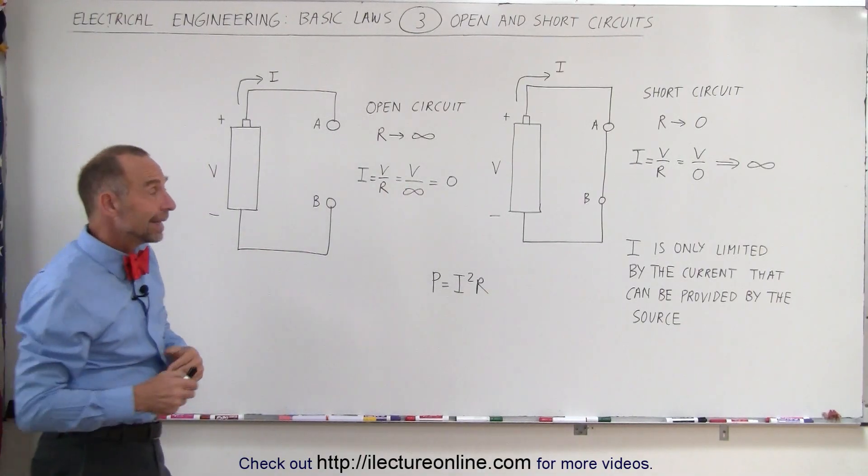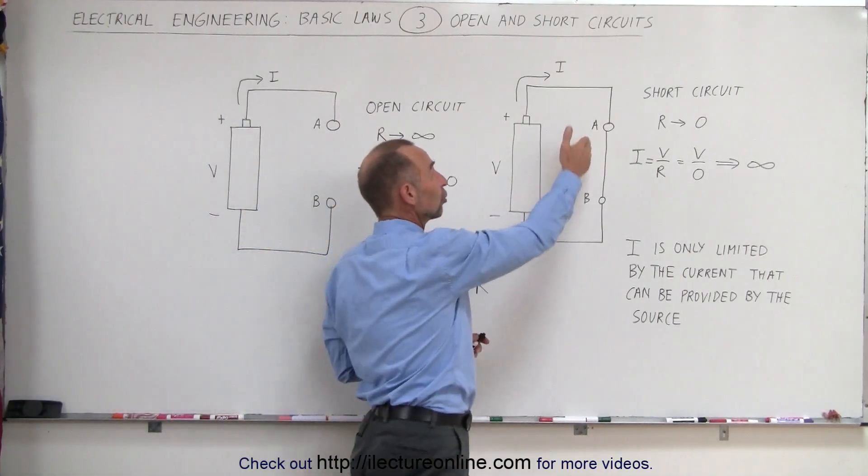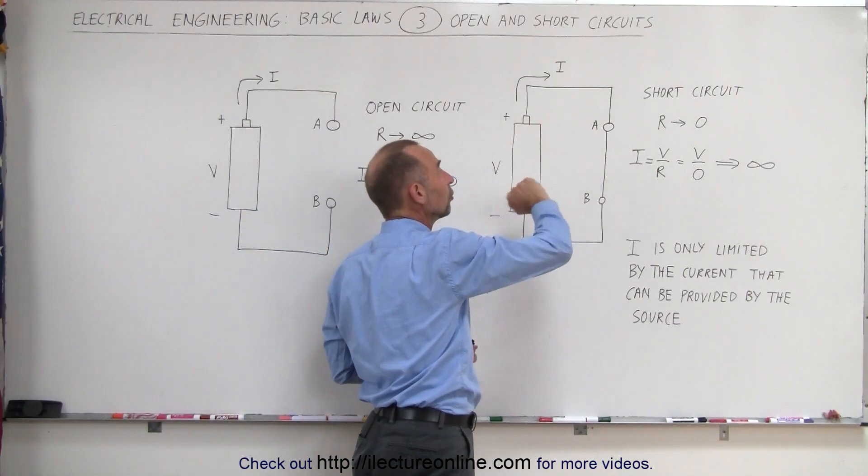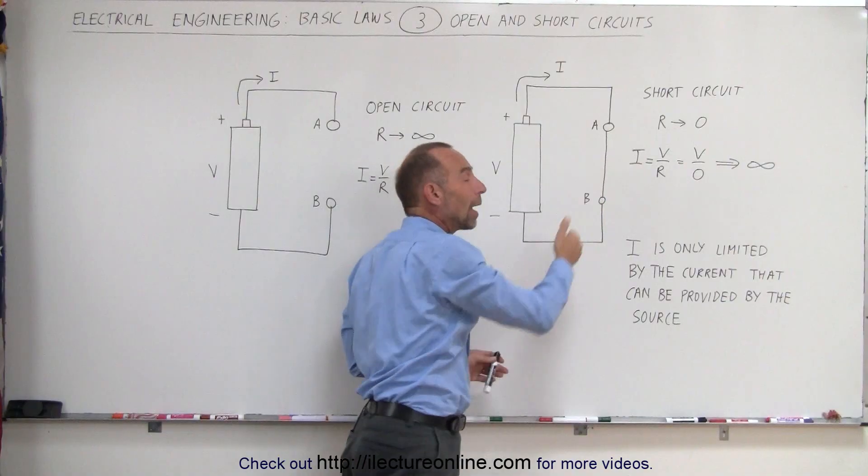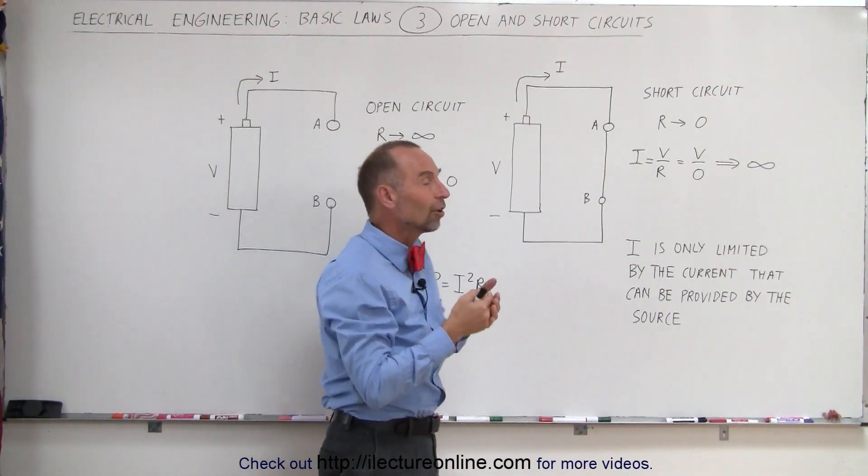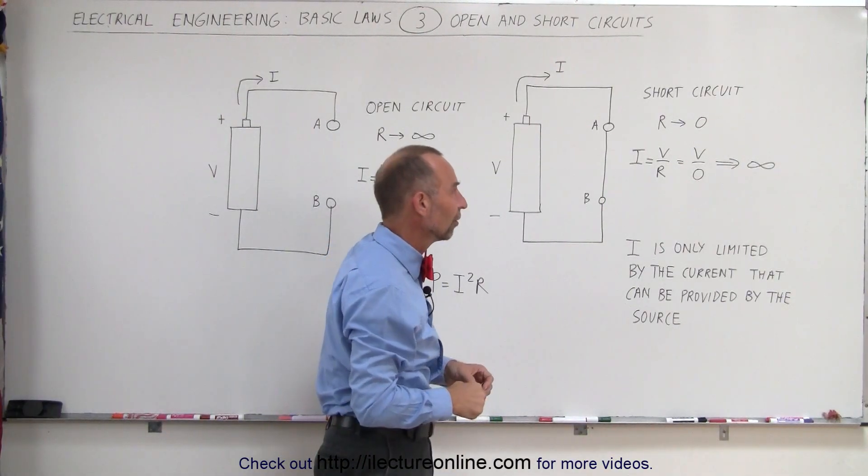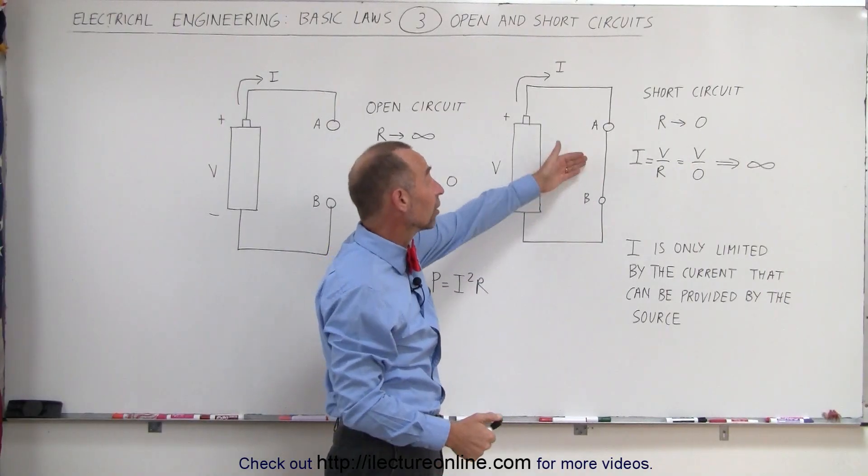A short circuit is the opposite of an open circuit. Between the terminals A and B connected to the voltage source, we have simply a wire—a conducting path that offers zero or very nearly zero resistance. For all intents and purposes, we can call it zero.